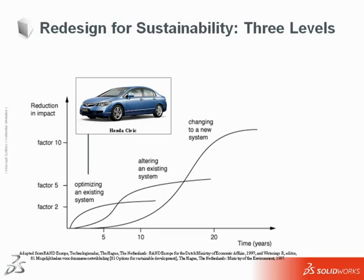Level 1, optimizing an existing system, is like a car that has been streamlined to improve its gas mileage. This efficient Civic is a good example of a product system that is optimized.